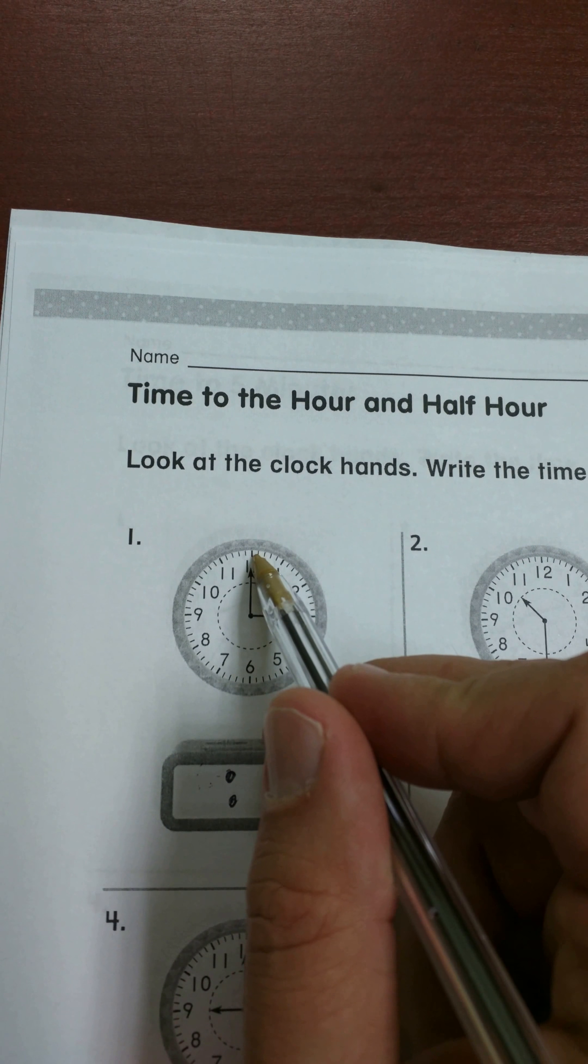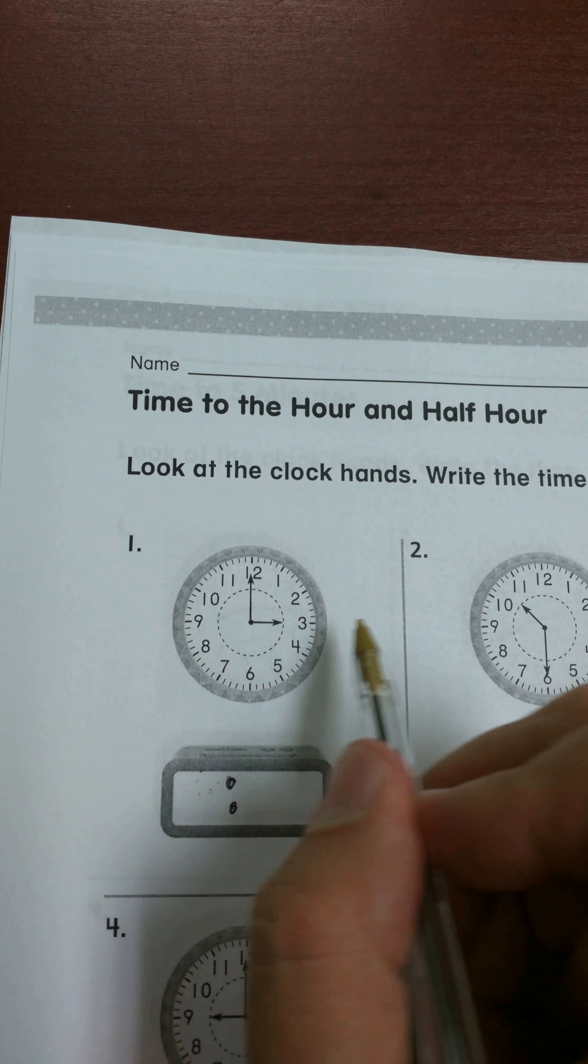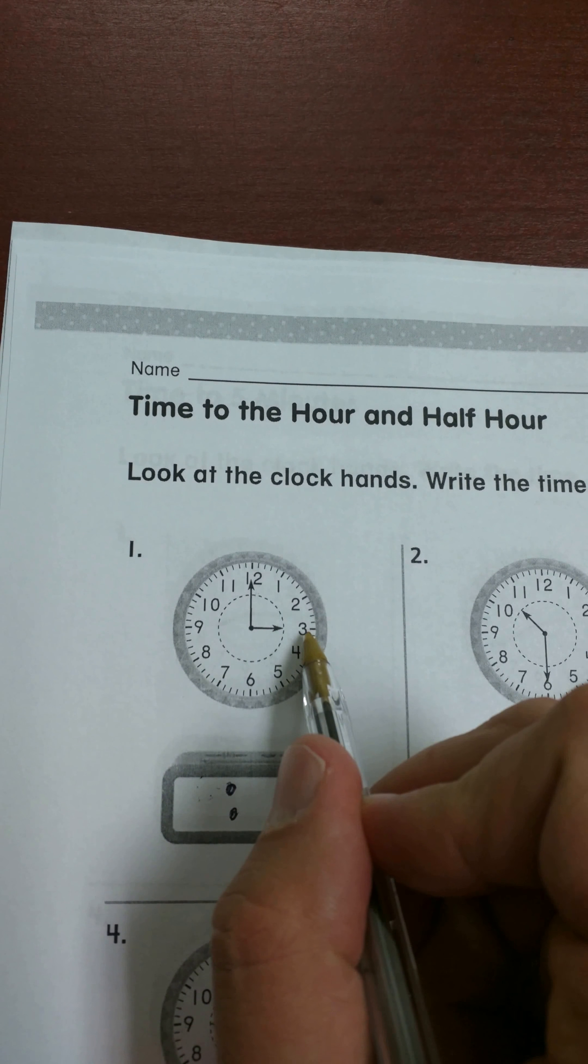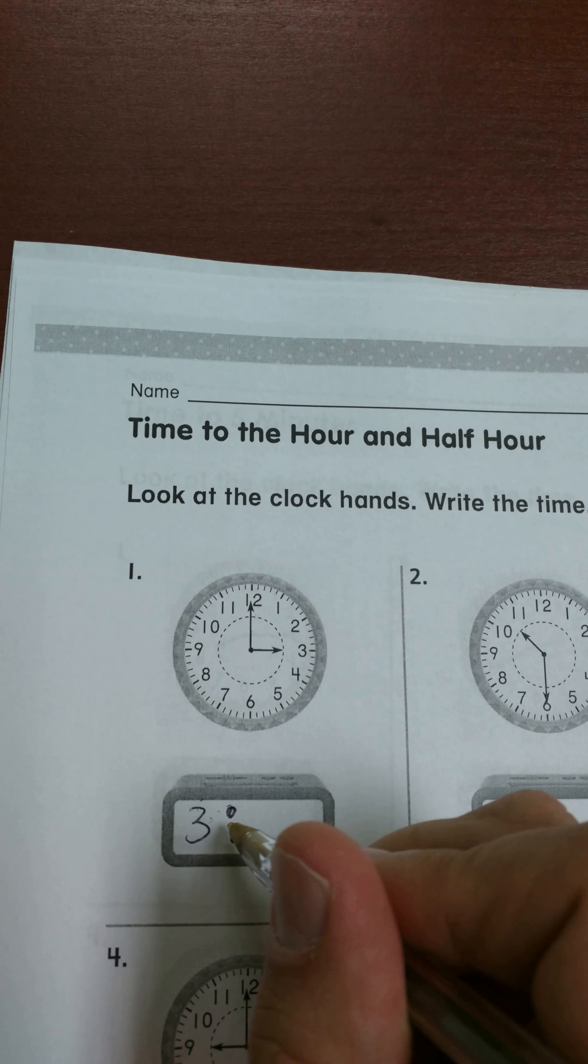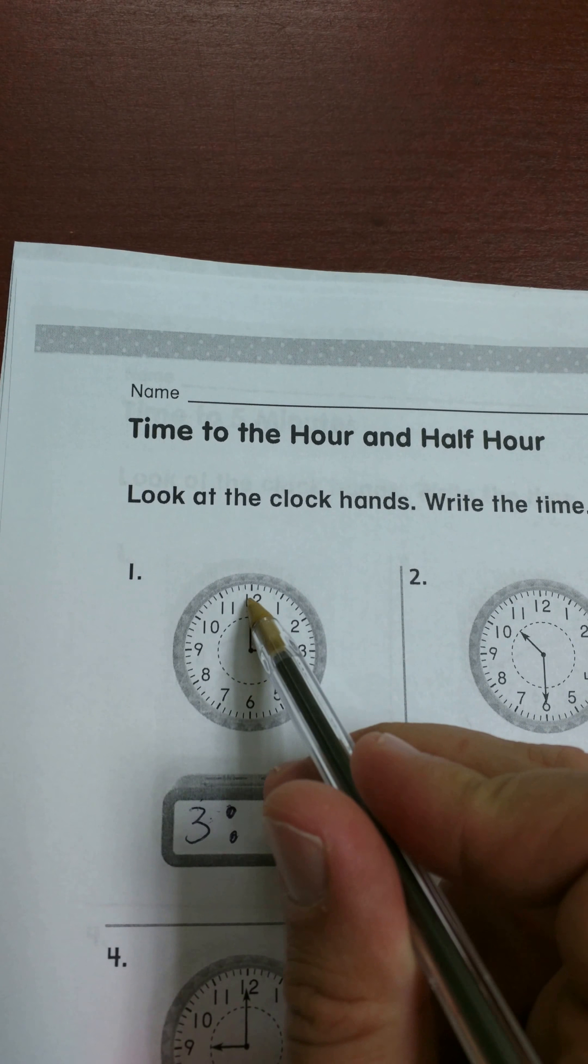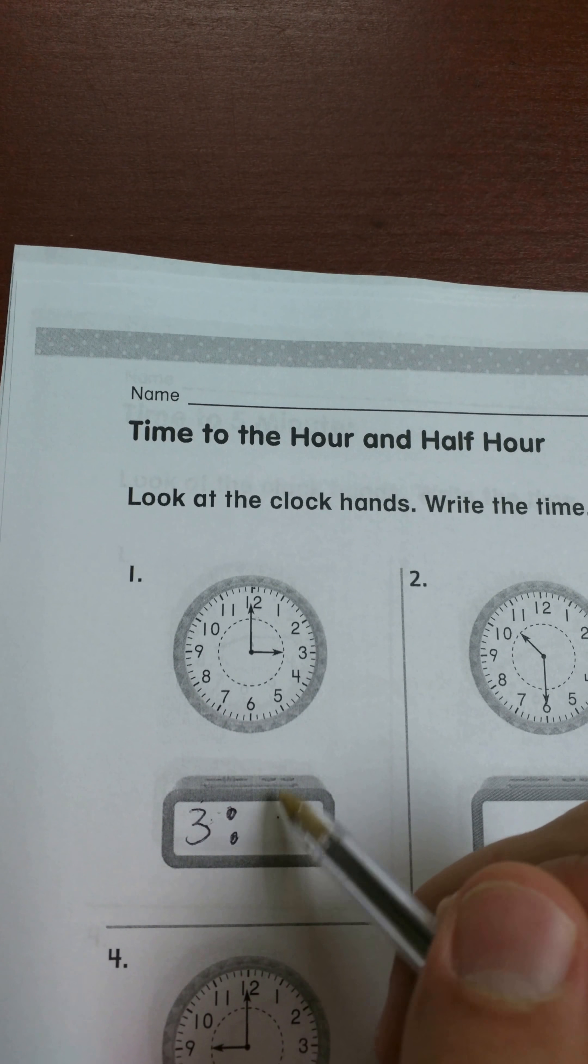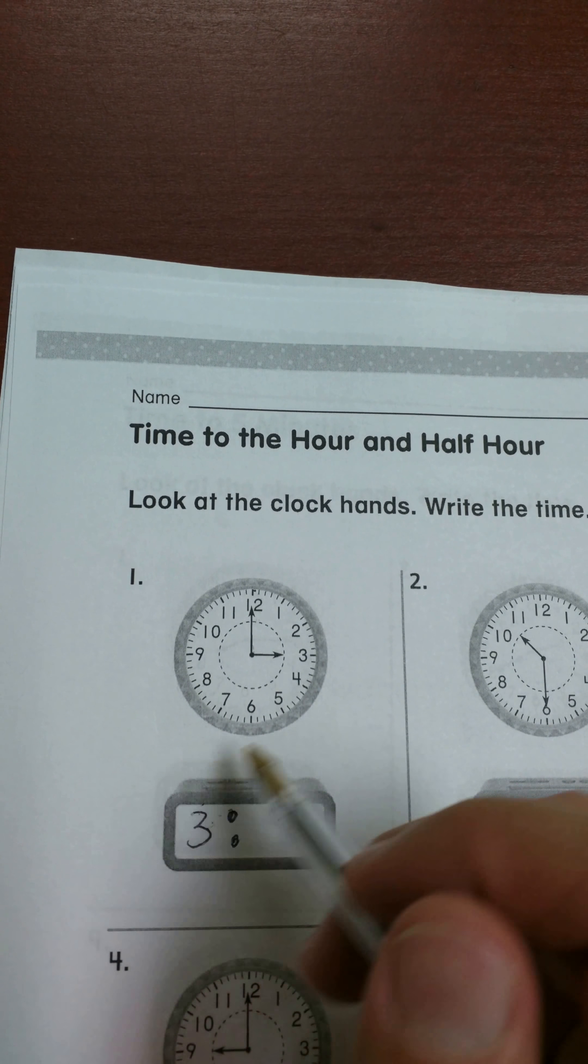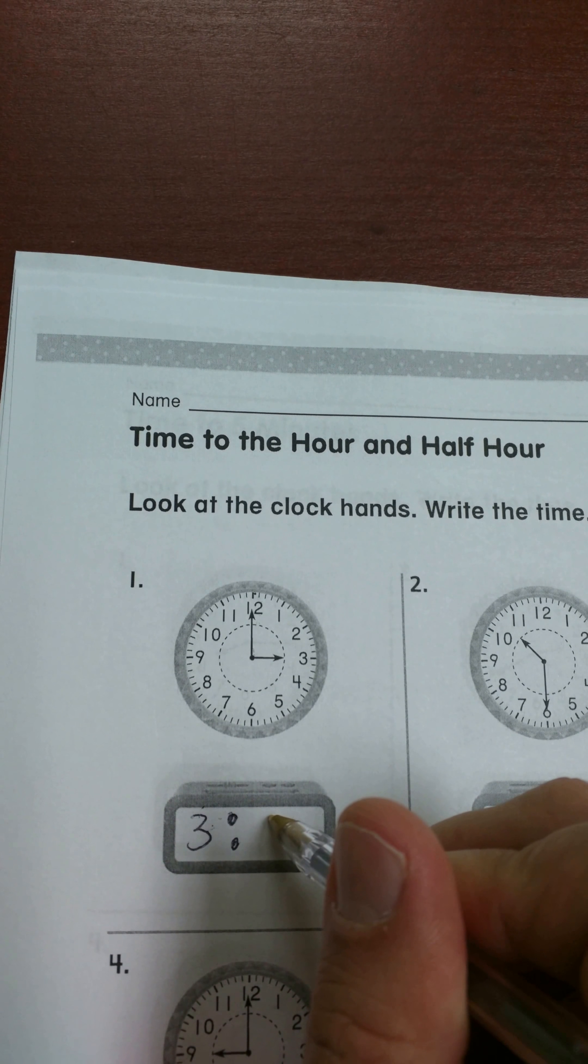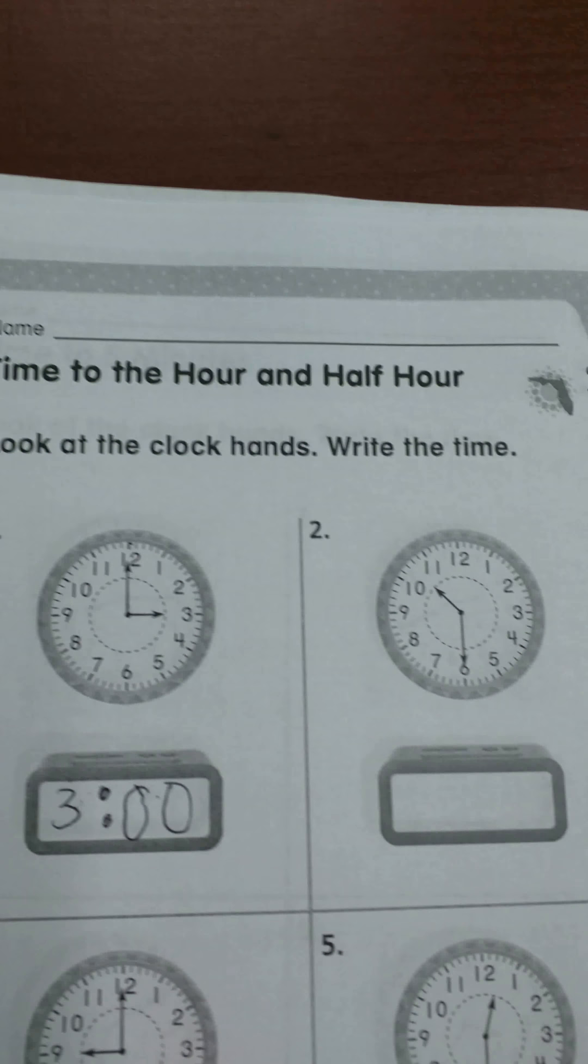The minute hand is the long hand, so that goes on the right side. If I'm looking at the hour, it's pointing directly at 3. And the minute hand is pointing right to the 12, so I know it's 3, and it's actually 3 o'clock. Because when the minute hand is pointing to the 12, that means zero minutes in that hour have passed. So it would be 3:00, otherwise known as 3 o'clock.